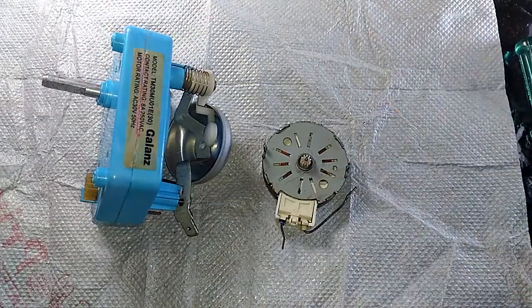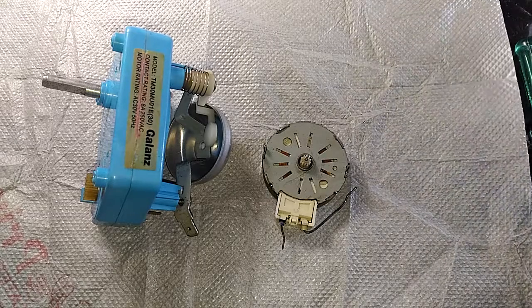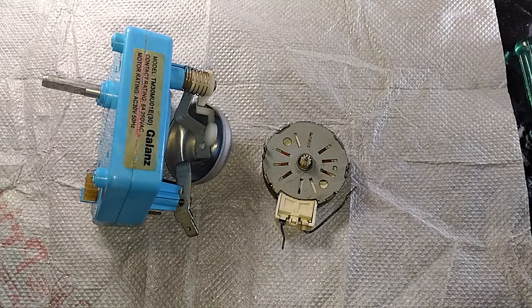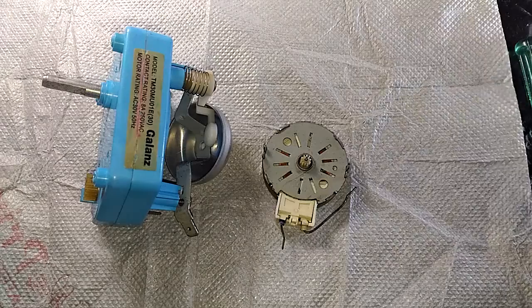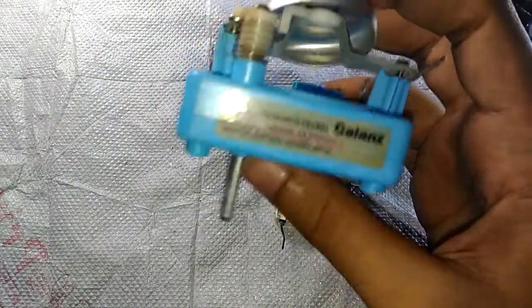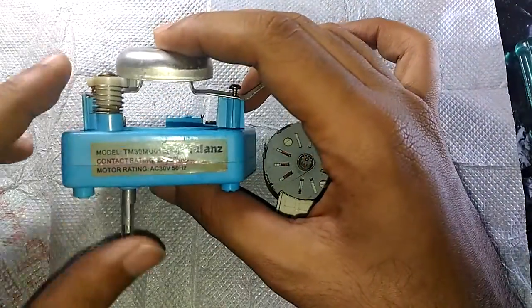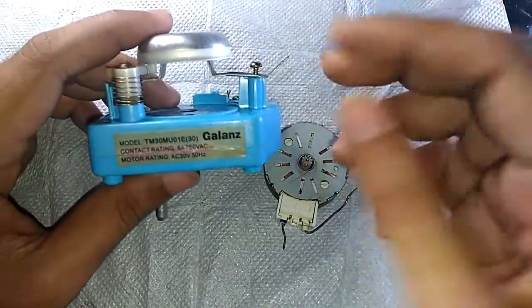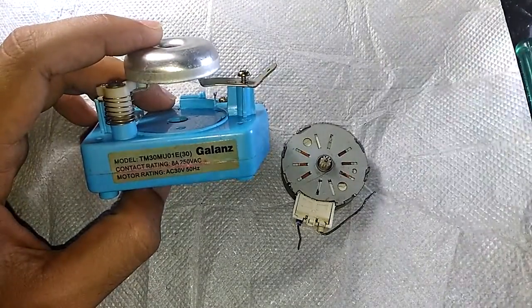Hello YouTube, in today's episode of what's inside, let's take a look at something different this time. It's not a fully electronic device, but instead an electromechanical device. What this thing really is, is a mechanical timer switch. Yes, this is a pre-digital era thing.